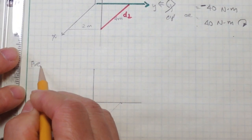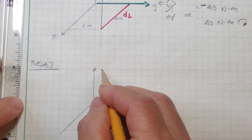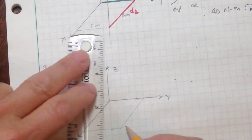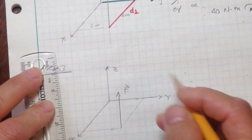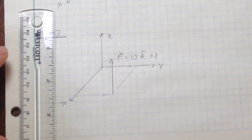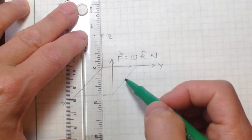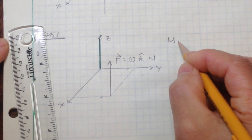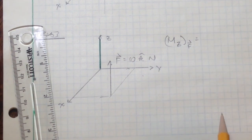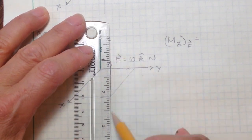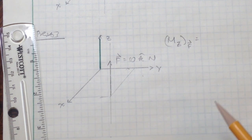Let's do another problem. We continue to use the same force F directed upwards with a magnitude of 10 newtons in the z-direction. Now we want to determine the moment about the z-axis. We need to find the perpendicular distance from a point along this axis to the line of action of F. But we realize that force F is parallel to the z-axis, so it doesn't cause any moment — that's simply zero.